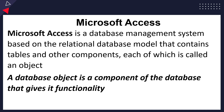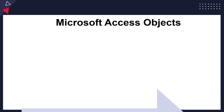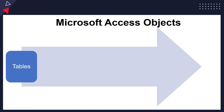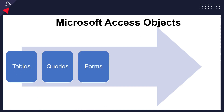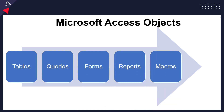In Access, the different components that can be stored are known as objects. An object is simply a component that helps give a database deeper functionality. The objects of Access are: tables (the primary database object), queries, forms, reports, macros, and modules. These are the components that give our database very good functionality.